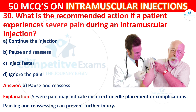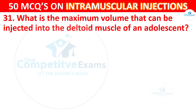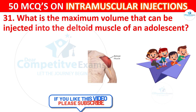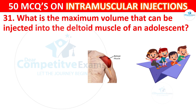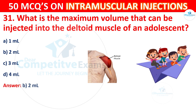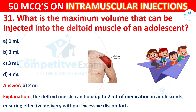Question 31: What is the maximum volume that can be injected into the deltoid muscle of an adolescent? The correct answer is B, 2 ml. The deltoid muscle can hold up to 2 ml of medication in adolescents, ensuring effective delivery without excessive discomfort.